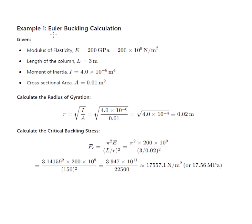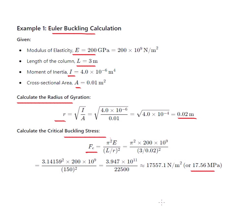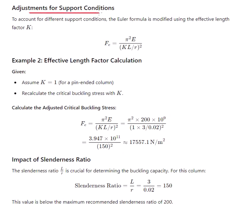Example — Euler buckling calculation: given the modulus of elasticity, length, moment of inertia, and cross-sectional area, first calculate the radius of gyration as the square root of I/A, then calculate the critical buckling stress Fe = π²E / (L/R)². Substituting the values gives Fe approximately equal to 70.56 MPa. We can adjust for different support conditions using the effective length factor K.